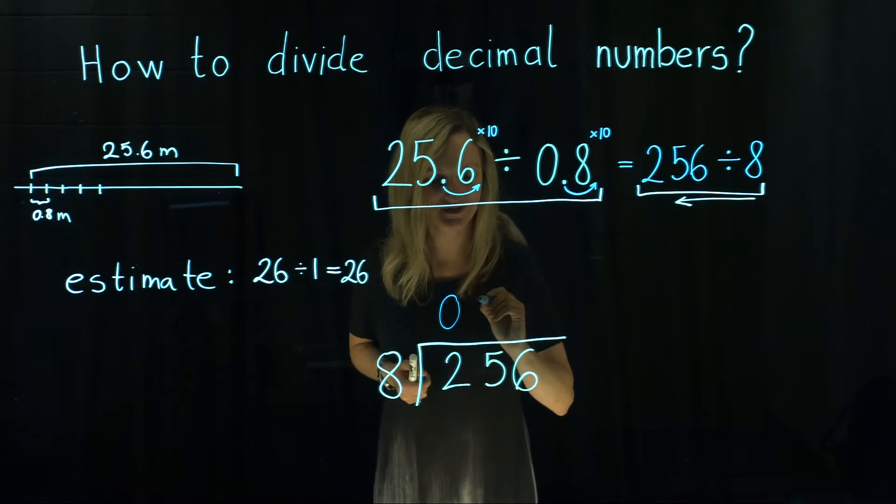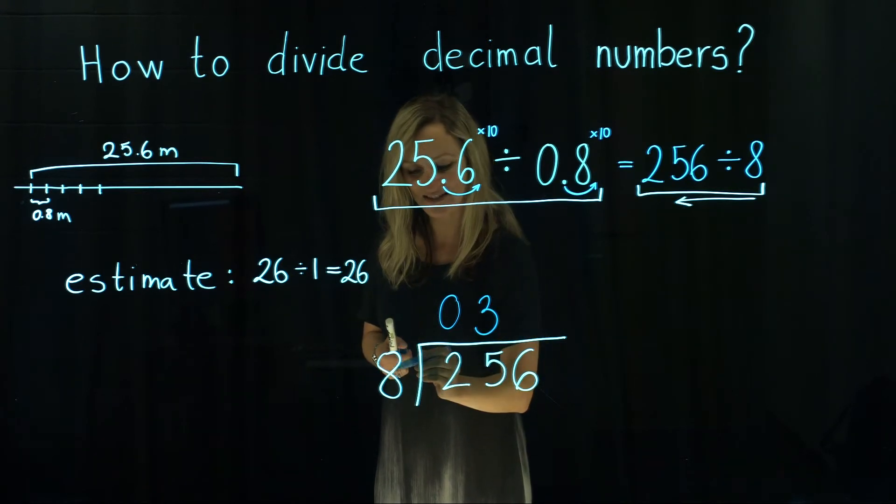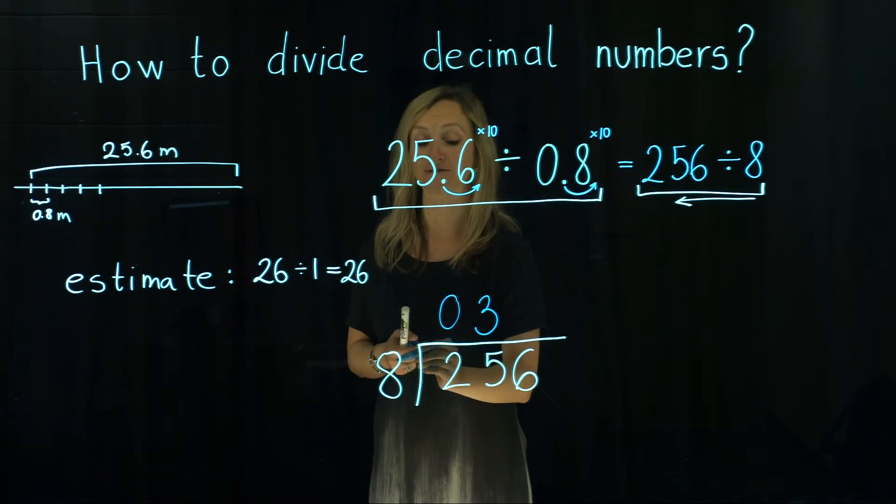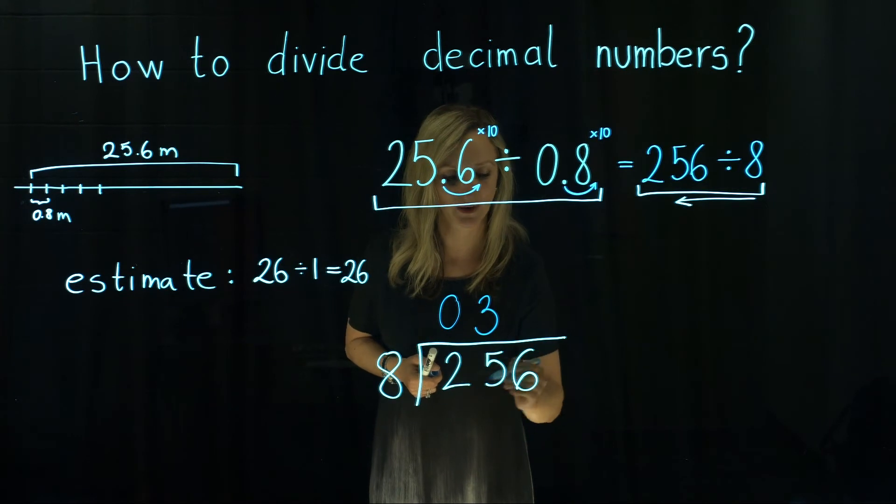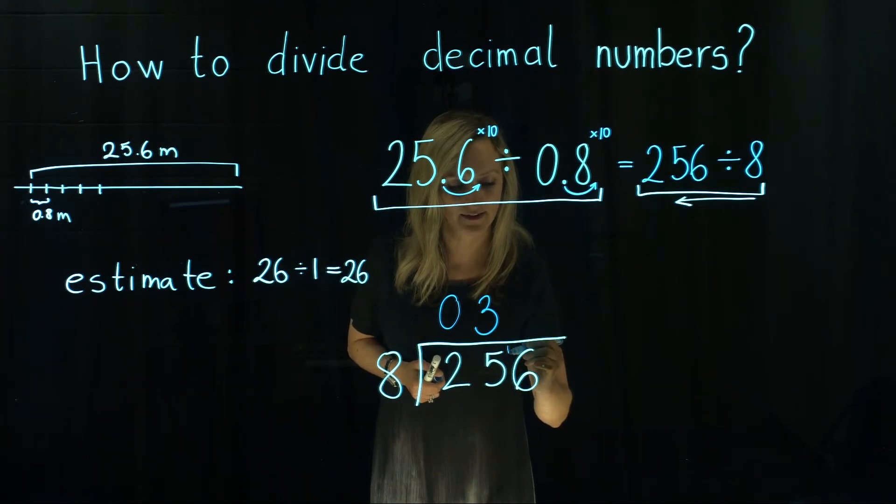It goes exactly 3 times. So 3 times 8 is 24. To get to 25, we've got the remainder of 1.